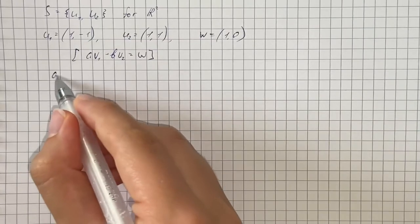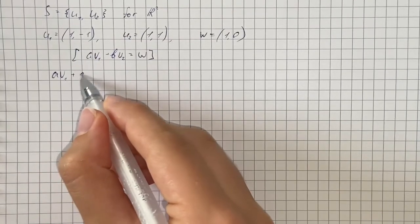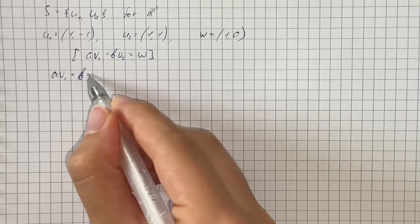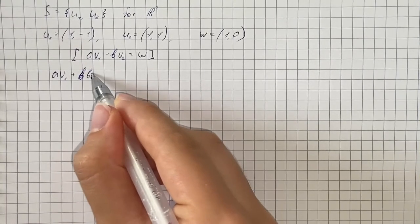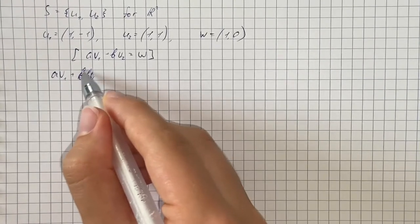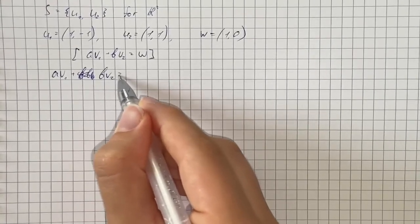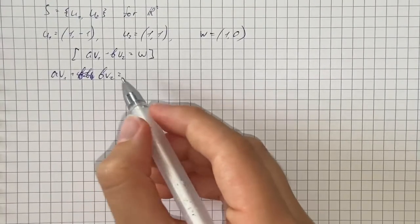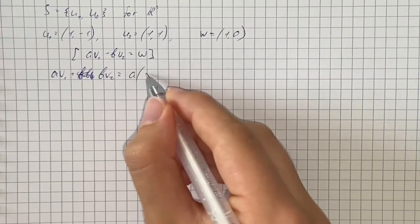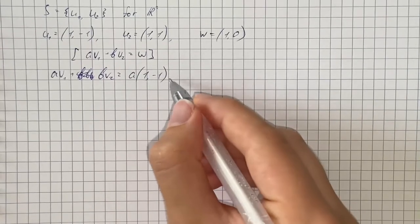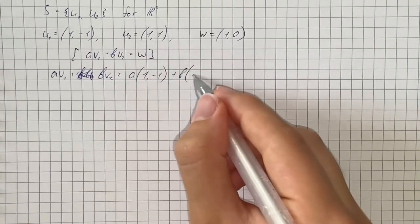Since A times vector 1 plus B times vector 2 equals A times (1, -1) plus B times (1, 1).